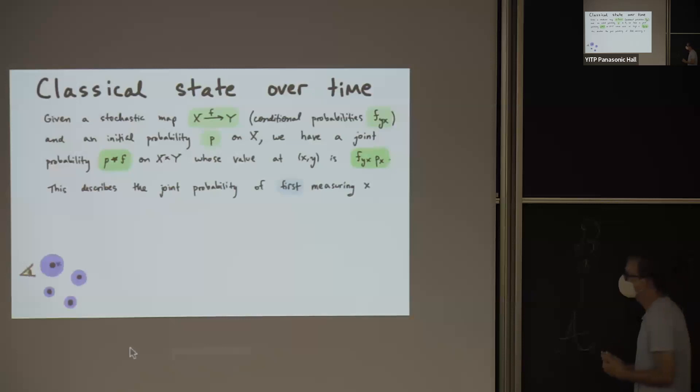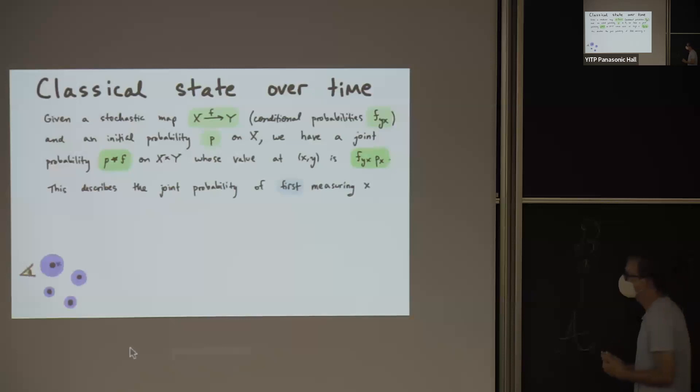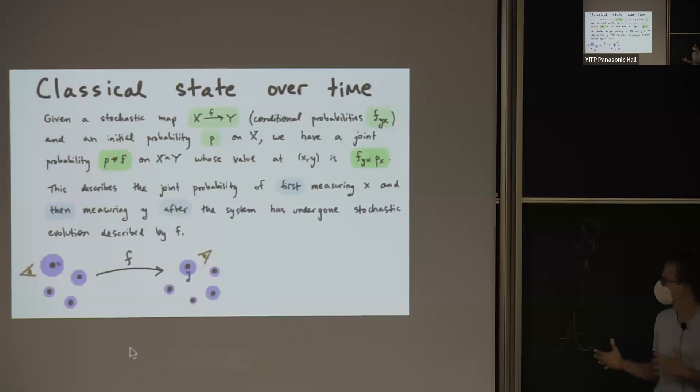And what do these numbers mean? They describe the joint probability of first measuring X, then measuring Y, after the system has undergone the stochastic evolution. And I should point out that this probability is not the product of the initial probability times the final probability, because that would require that these two random variables are independent, which is not true because of this stochastic map F that connects the two.